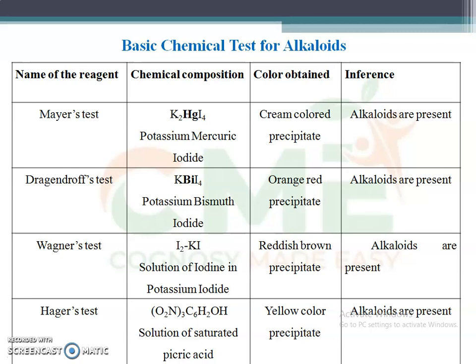Let's enter into the subject. The basic chemical tests of alkaloids - if you want to detect the presence of alkaloids in any plant, you have to perform four basic chemical tests. In the previous session on GPAT tips and tricks, I mentioned that named chemical reactions are most important in pharmacognosy.